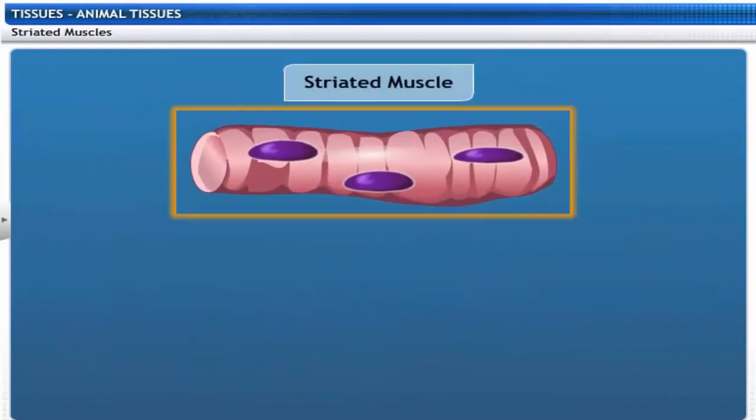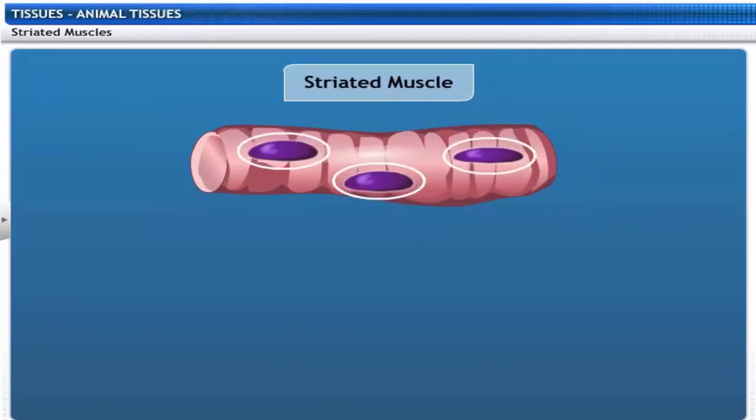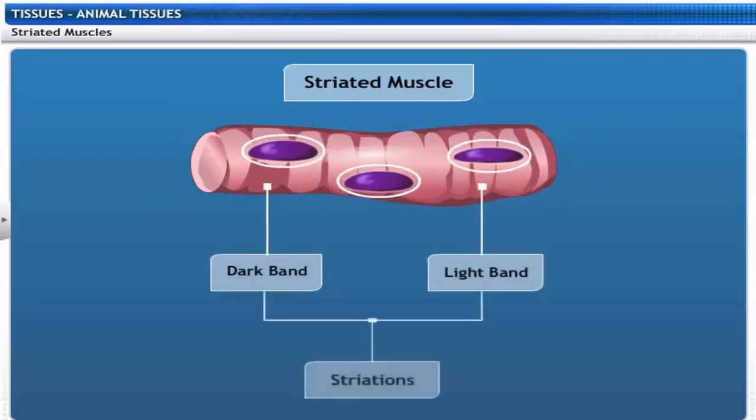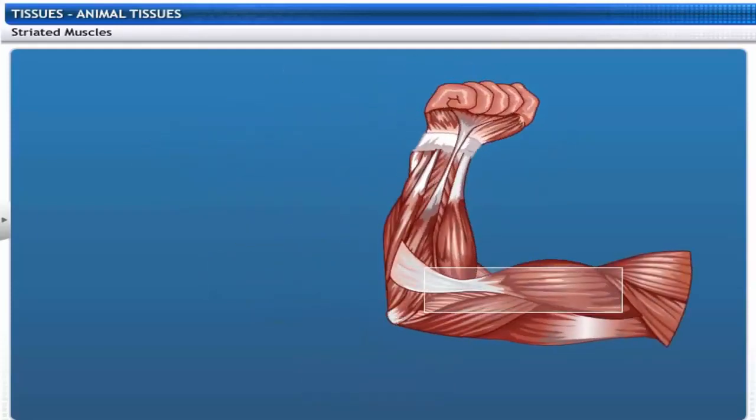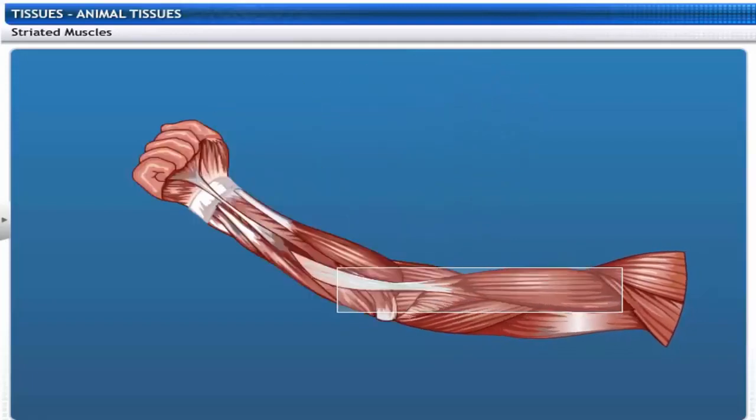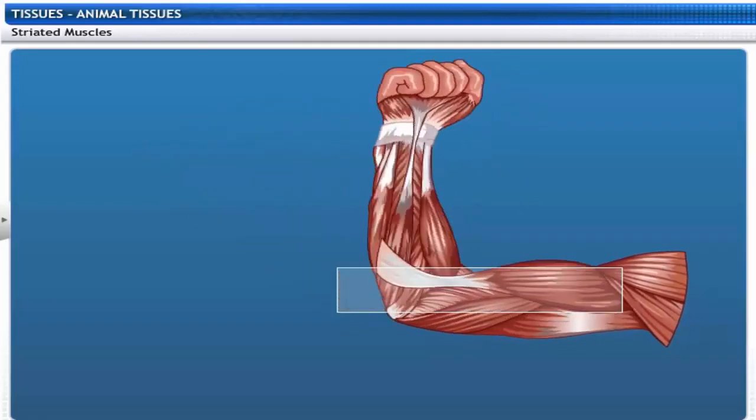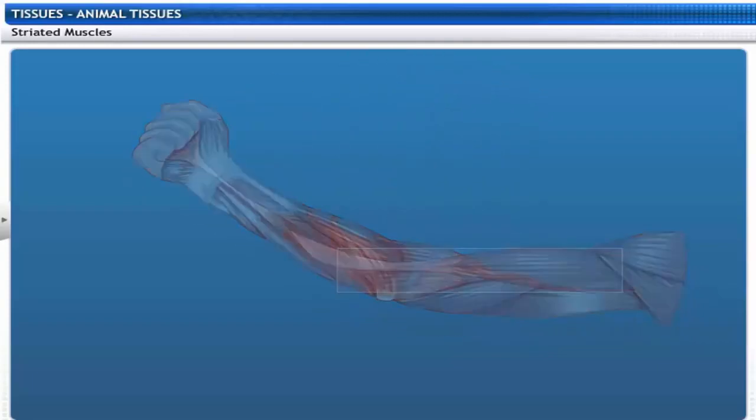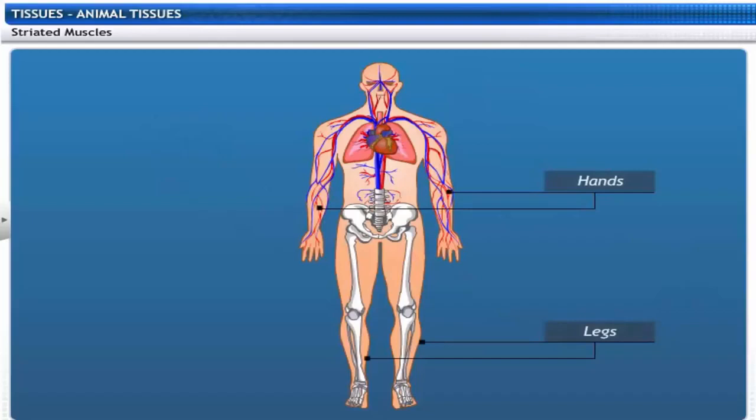Striated muscles are cylindrical, unbranched, and multinucleated. Each muscle fiber has dark bands alternating with light bands called striations. These muscles help us move our limbs and lift weights at will. So striated muscles are called voluntary muscles. They are found in our limbs, body wall, face, and neck.